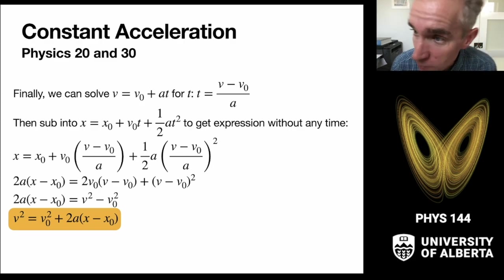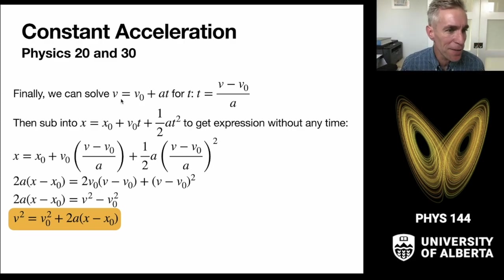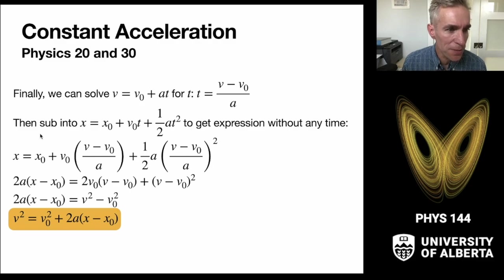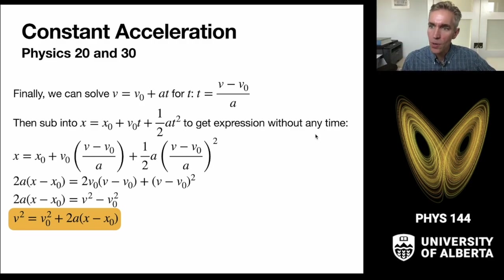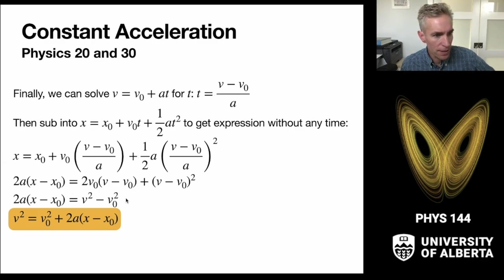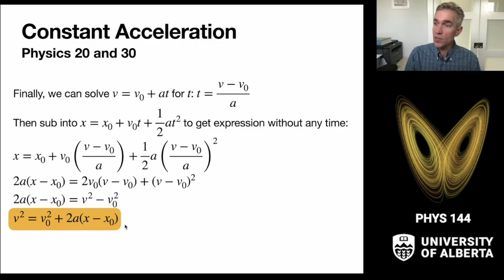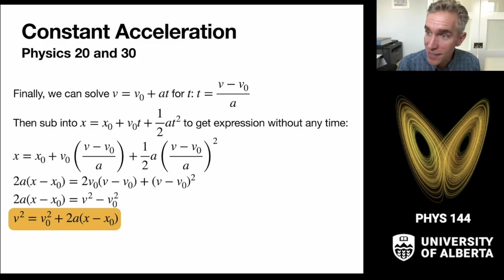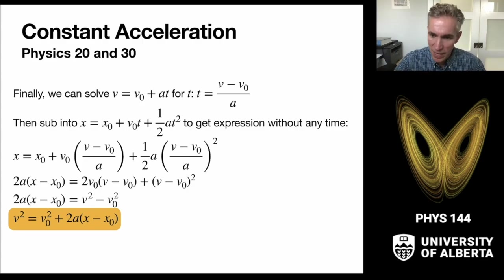There's one other expression we use a lot. Taking v = v₀ + at, solving for t = (v − v₀)/a, and substituting into x = x₀ + v₀t + ½at², we eliminate time and after some algebra get v² = v₀² + 2a(x − x₀). This expression has no time dependence and we'll use it often when time isn't given in the problem, making kinematic problems much easier to solve.